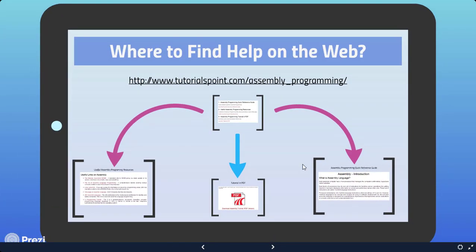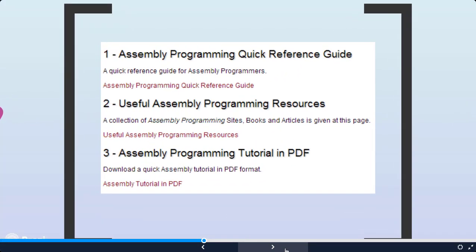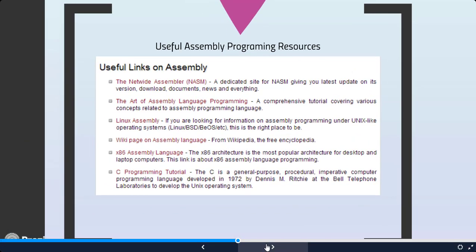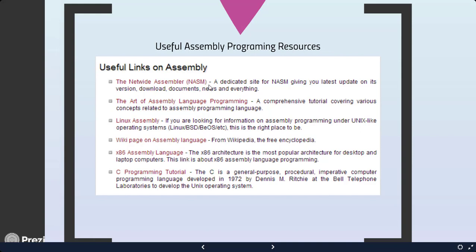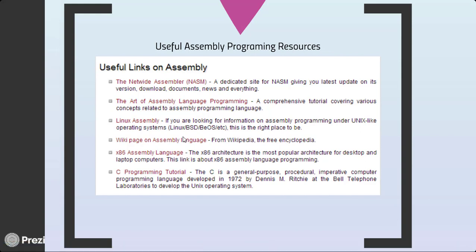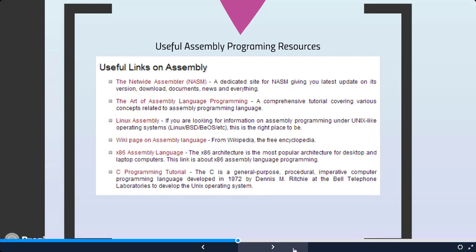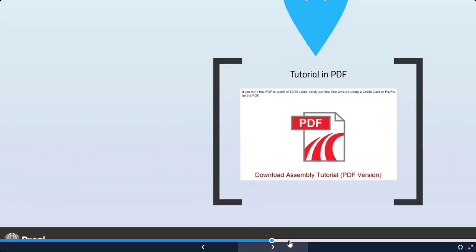If you'd like to get more information on assembly programming, there are references you can follow. There are actually several kinds of assemblers. One of them is NASM, the Netwide Assembler. There's also TASM, Turbo Assembler, and so on. Basically, they are assemblers — what you call assembly language programs.